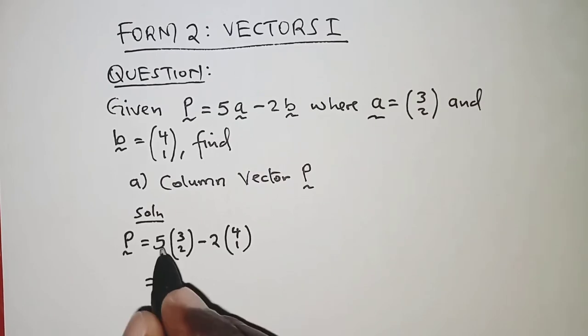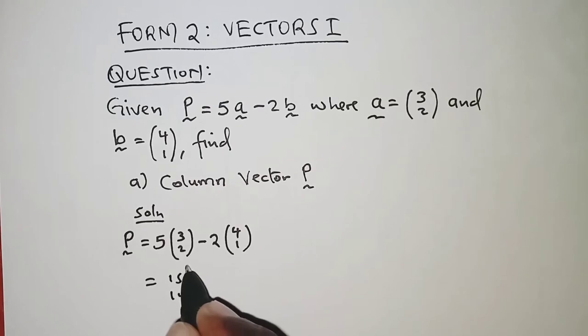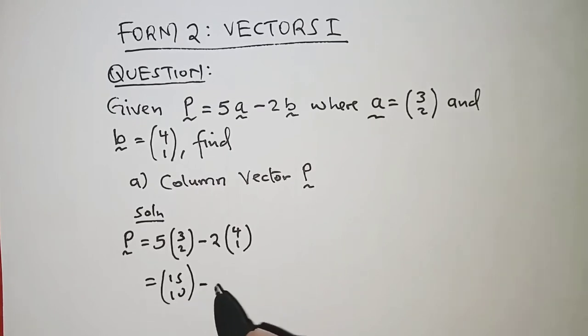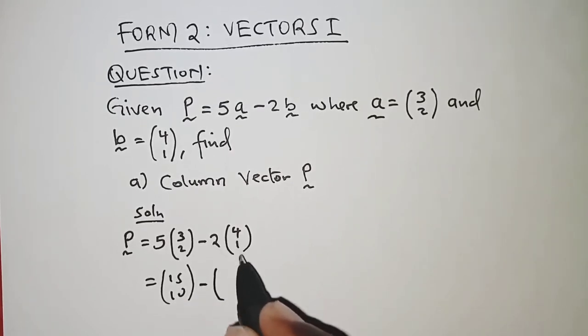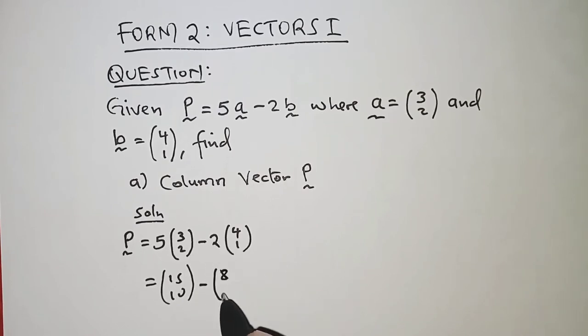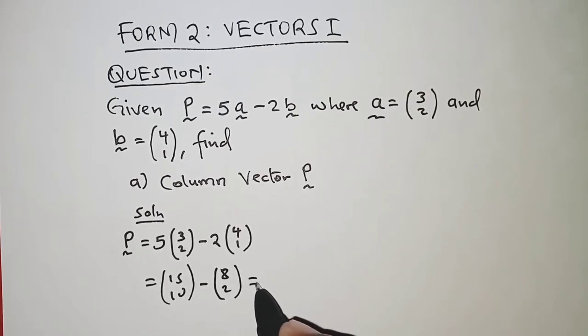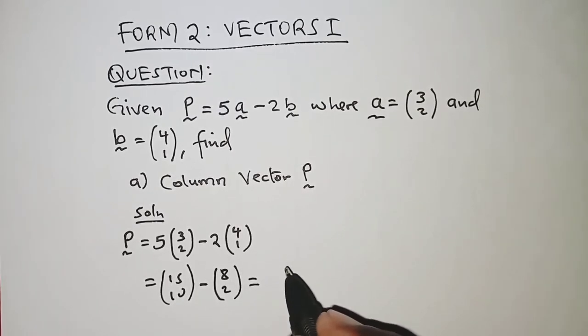So, simplifying this, we have 5 by 3 is 15, 5 by 2 is 10, minus 2 by 4 is 8, 2 by 1 is 2, and that finally is (7, 8).